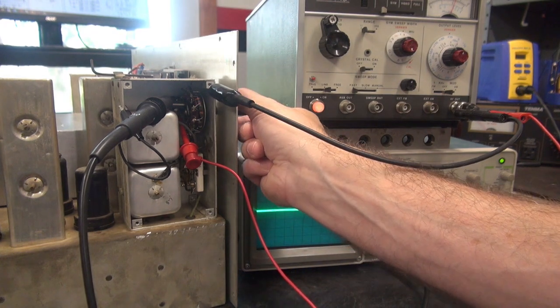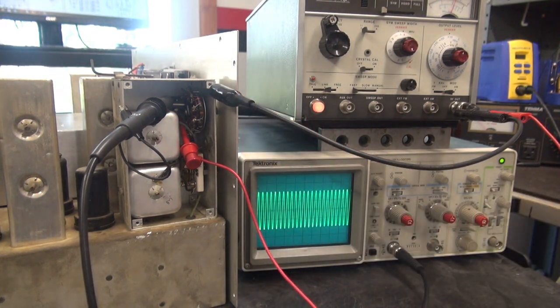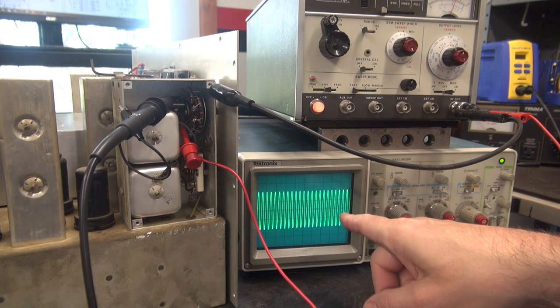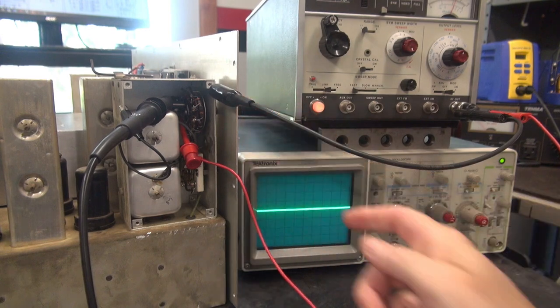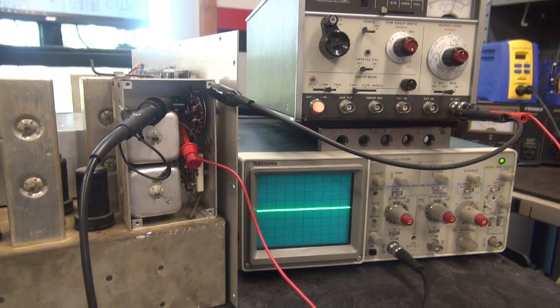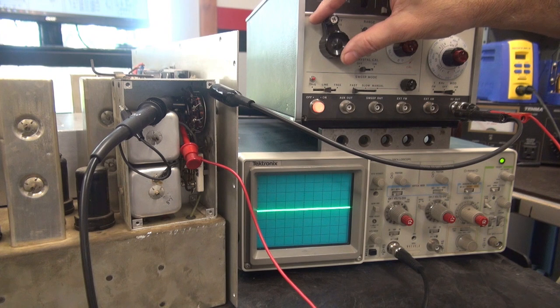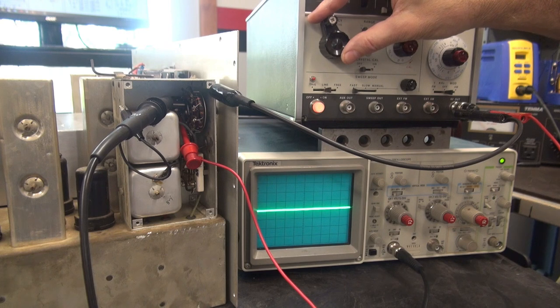If you have your switch in off, that's the 455kc coming direct off of the generator. So you need to be in one of the crystal select positions. Then you're going to play with the frequency of your generator. Now this one's old and kind of touchy, but you get the idea.